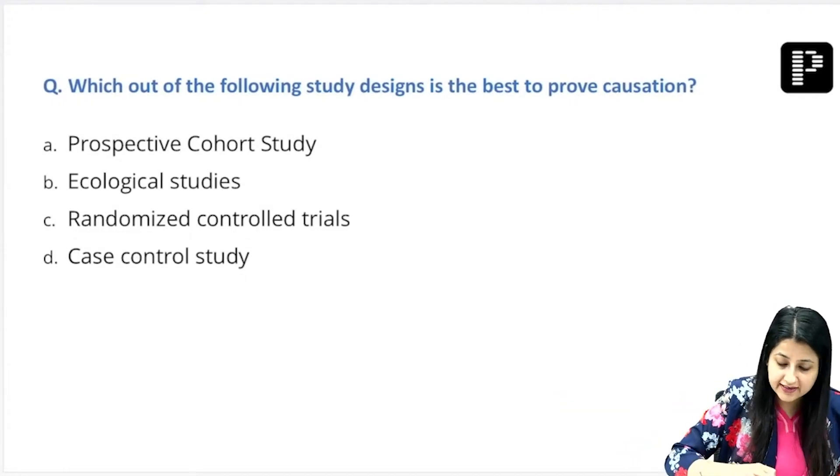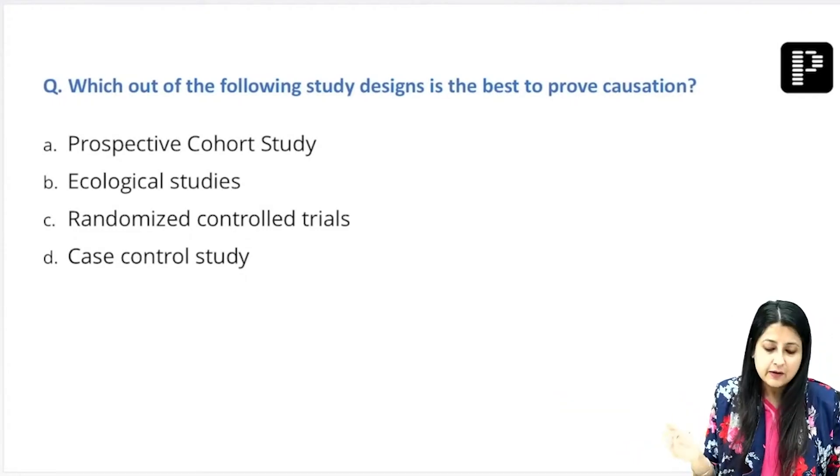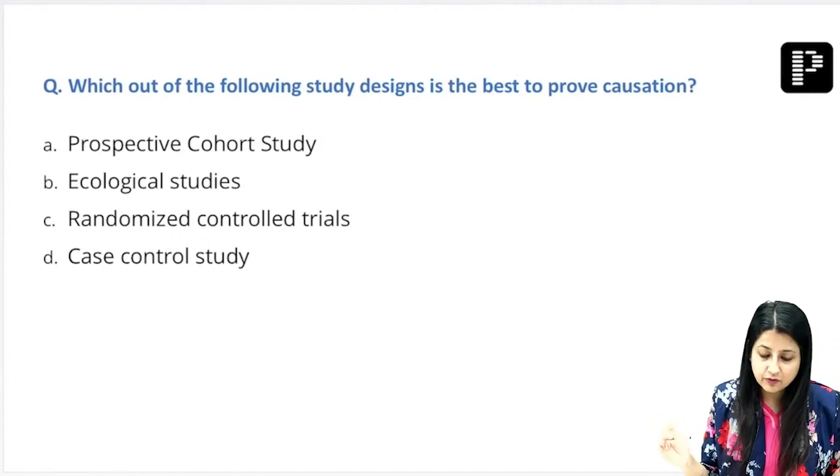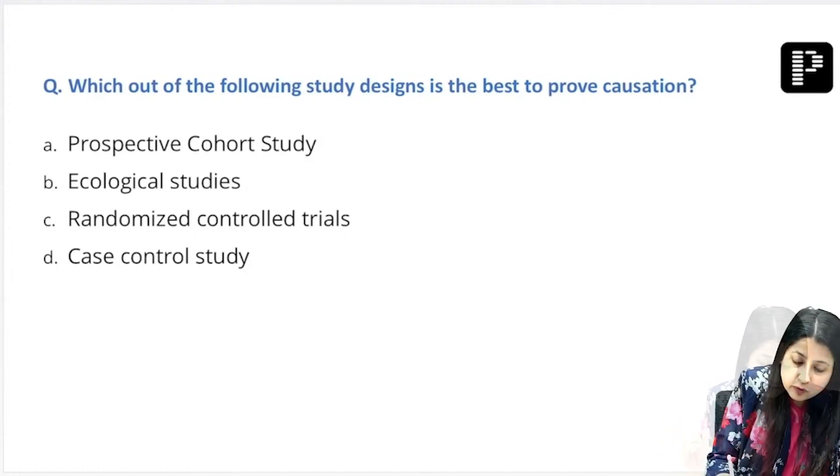Finally, which out of the following study designs is the best to prove causation? Evidence-based medicine: prospective cohort, ecological, RCT, or case control. Which one is the best to prove causation? Everybody, what is your answer?